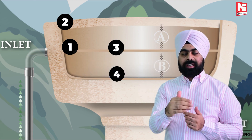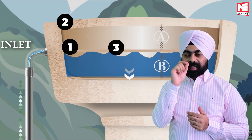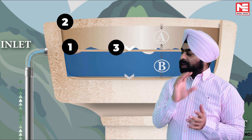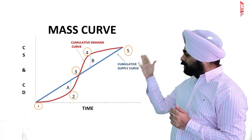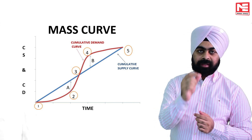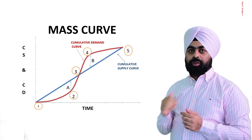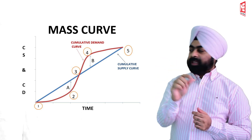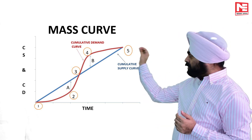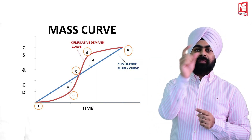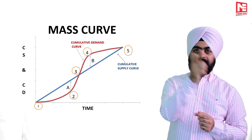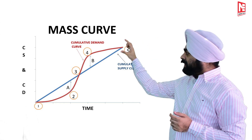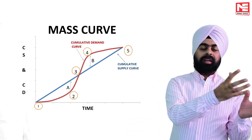Beyond 0.4, the rate of demand becomes less than the rate of supply, meaning the water level will start increasing. Hence the water level in the reservoir will be minimum at 0.4, meaning the reservoir will be empty at 0.4. Between 0.1 and 0.3, cumulative supply is more than cumulative demand, so there is always accumulation. Beyond 0.3 to 0.5, cumulative demand is more than cumulative supply, so there is always depletion. This maximum depletion, observed at 0.4, is equal to the difference of cumulative demand and cumulative supply. Let us suppose this depletion comes out to be B liters, meaning at 0.4, B liters of water will be drained from the reservoir and it will become empty.